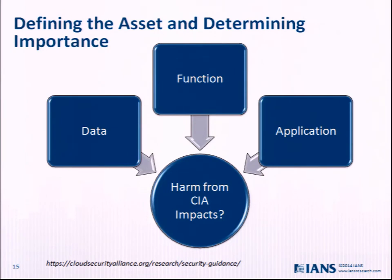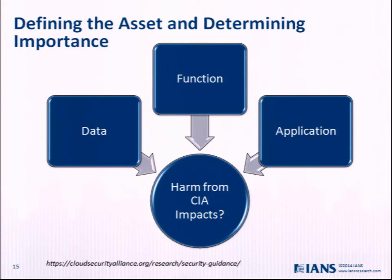When they start out, the first thing in the guidance that I really do appreciate is to take and make an understanding of the asset and determine its importance. What's an asset? An asset can be data, a function, or an application — because the cloud can contain all of that. You could be going to the cloud just for a function, like mail hygiene or a federated identity provider, or a specific application like Salesforce or Office 365, or maybe you're just putting a bunch of data up in the cloud. Then understanding how important it is — and what happens if you lose C, I, or A: confidentiality, integrity, and availability.